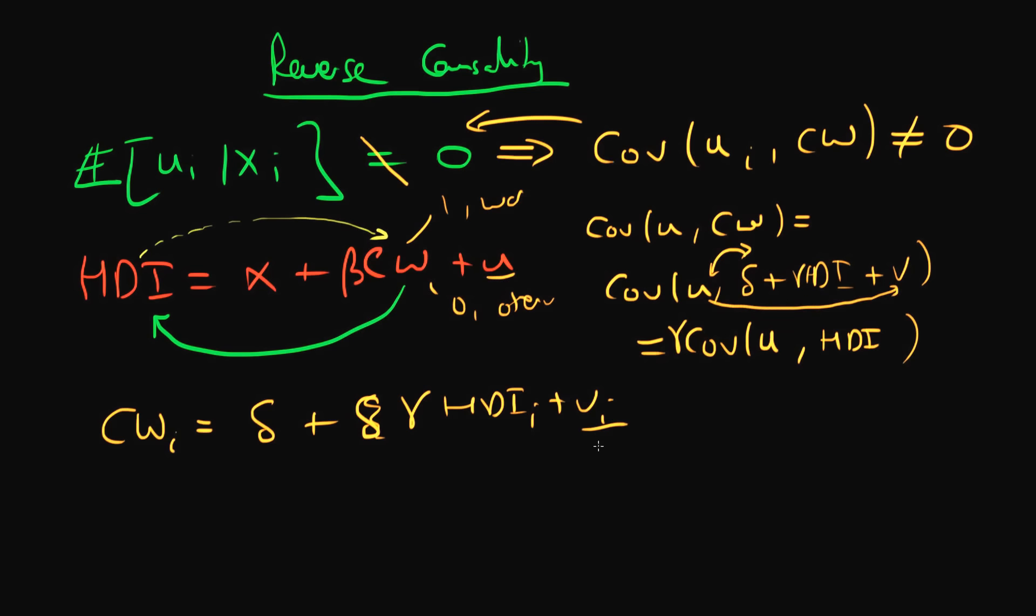I can write this whole thing as gamma times the covariance of U with the HDI index, which is the same as gamma times the covariance of U with, well I've got an expression for my HDI index, that's alpha plus beta times the civil war index plus U. And note that this term here is definitely going to contain the covariance of U with U, which is just the variance of U, which in general is not going to be equal to zero.